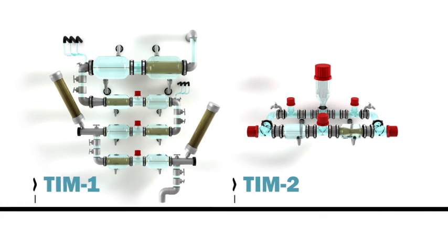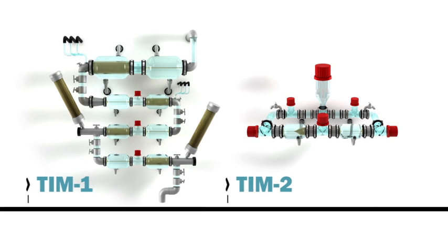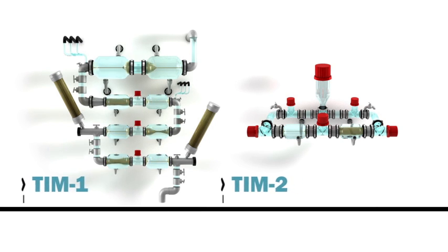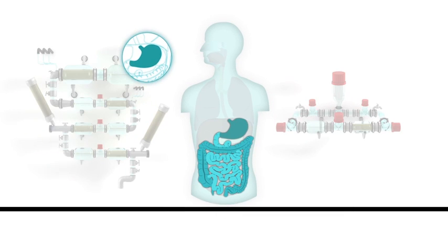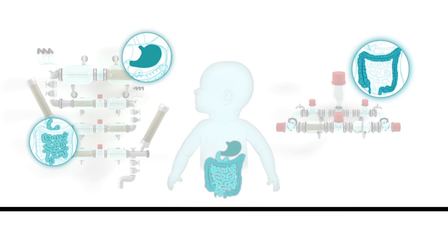TIM allows us to gain insights in what, how and to what extent nutrients but also pharmaceutical compounds become available for absorption. Both models can be adjusted to simulate the GI system of an adult or a child.